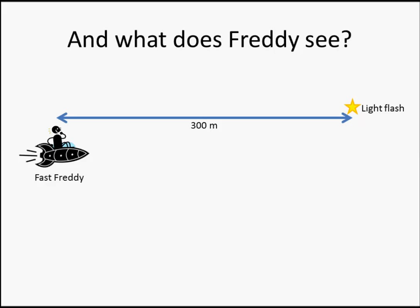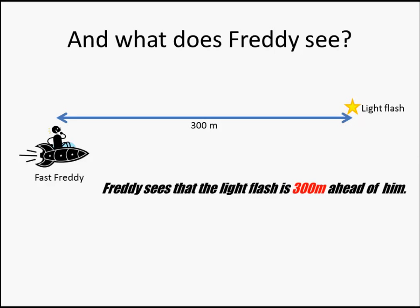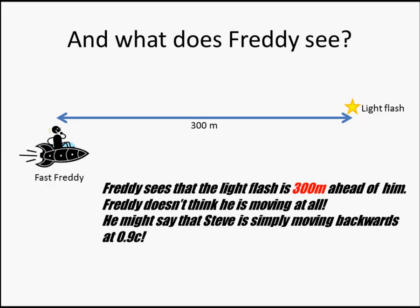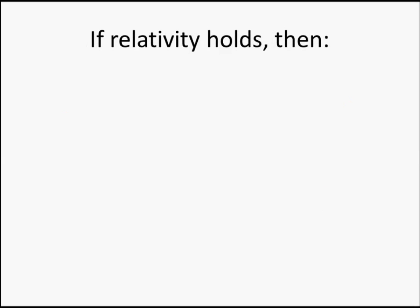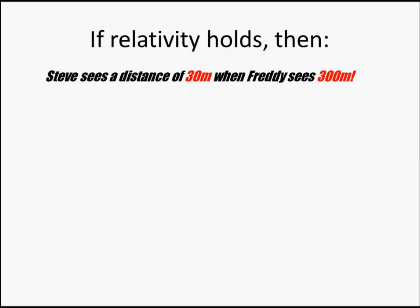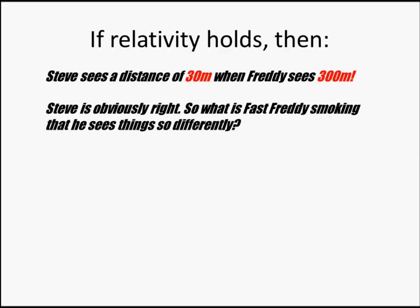But what does Freddy see? The speed of light is constant, so he simply sees the flash of light 300 meters ahead. He doesn't even know that he's moving, because he's looking straight ahead, and not watching Steve. And if he was watching Steve, he'd just think that Steve was moving back at 0.9C. So, if relativity is true, then Steve sees a distance of 30 meters, when Fred sees a distance of 300 meters. That's a big difference.